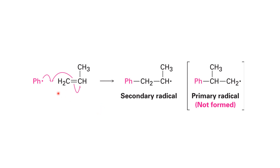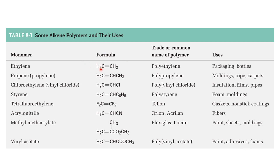If the building block is an asymmetric structure, the growing radical has two options: it can generate a secondary radical at one position, or a primary radical at the other. By observation, radical stability is also similar to carbocation — the more substituted radical is more stable. So the radical attacks the less hindered position, generating the secondary radical, and the product has alternating methyl groups. Depending on the starting material: ethylene gives polyethylene, propylene gives polypropylene, vinyl chloride gives PVC, styrene gives polystyrene, and tetrafluoroethylene gives the famous Teflon.